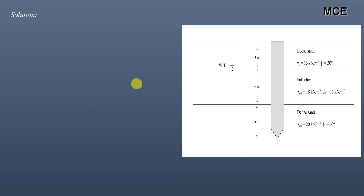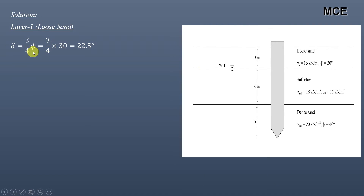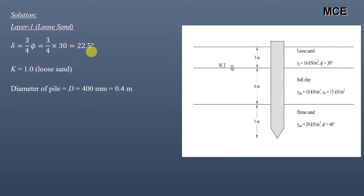First we will find the skin friction resistance in each layer. The first layer is a loose sand. The friction angle between the pile and the soil, delta, is equal to 3/4 of the angle of internal friction, so it will be 3/4 of 30 degrees, which is 22.5 degrees. For loose sand, the lateral earth pressure coefficient K is equal to 1. The diameter of the pile is 400 mm, which is 0.4 meters.